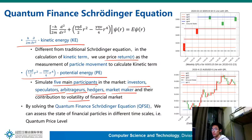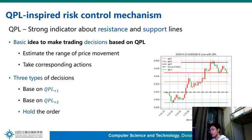After obtaining QPLs, we develop a quantum price level-inspired risk control mechanism. The basic usage of QPL is to estimate the range of price movement and then take corresponding action. There are three types of actions, based on QPL1, QPL2, and hold the order.